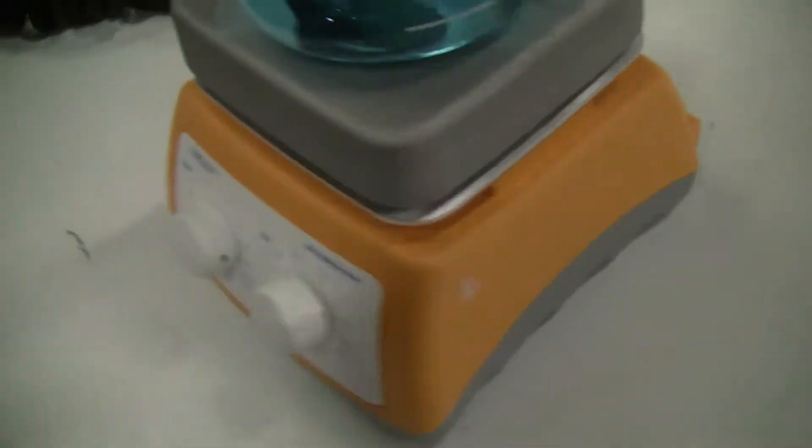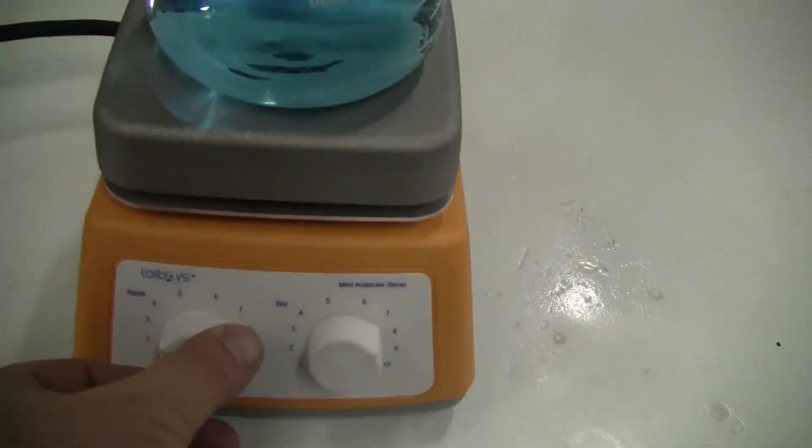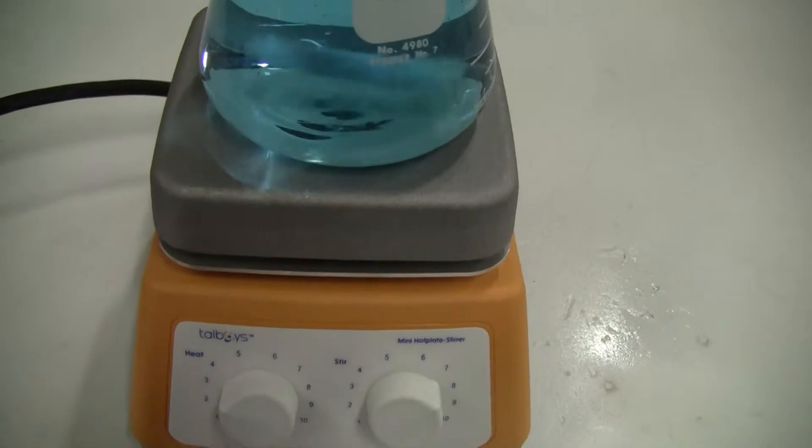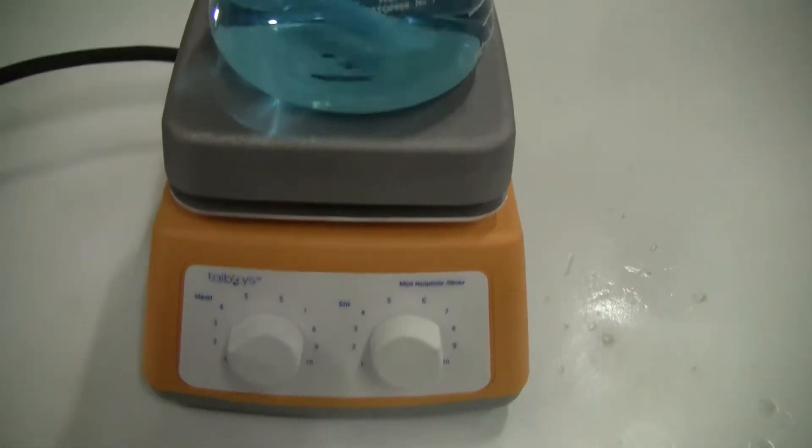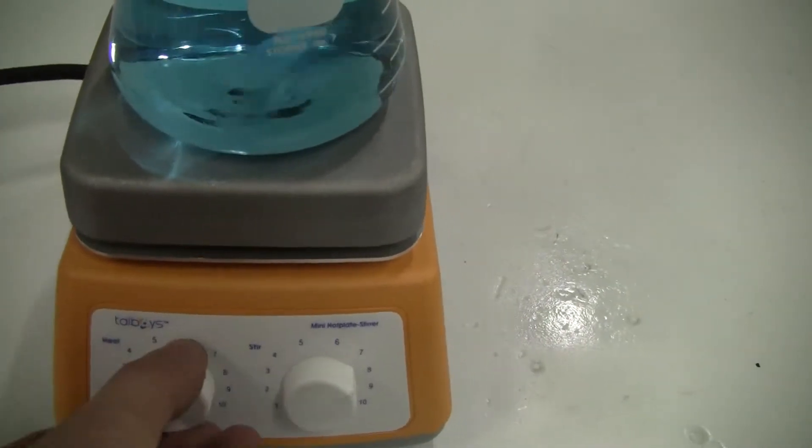This cost-effective hot plate stir is very simple. There's no heat indication. You're just going to set it at a particular percentage or a number. The plate's going to get hot. If you don't want heat, you would turn it off.